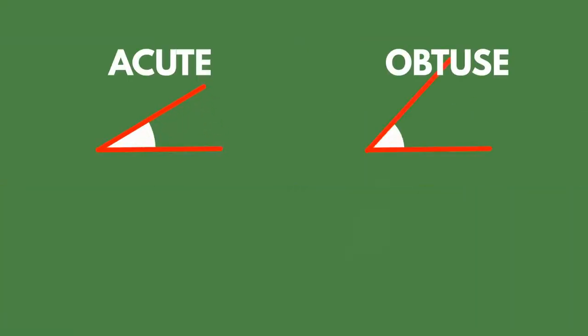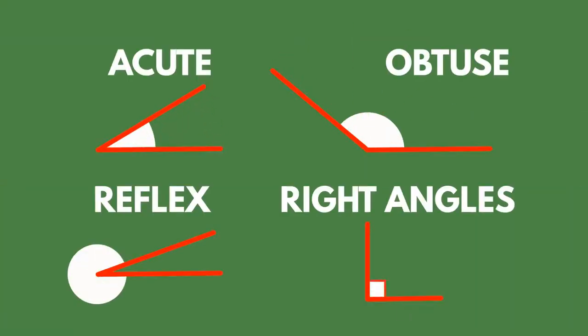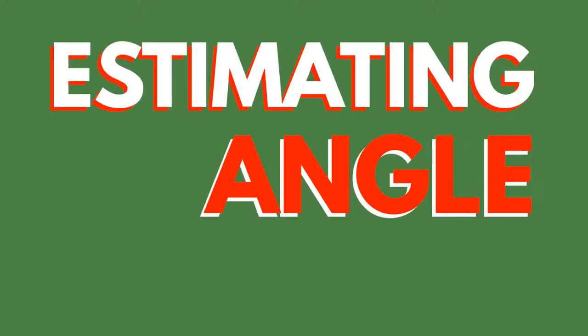Acute, obtuse, reflex, and right angles are terms we use to describe angles. They are useful when estimating angle size.